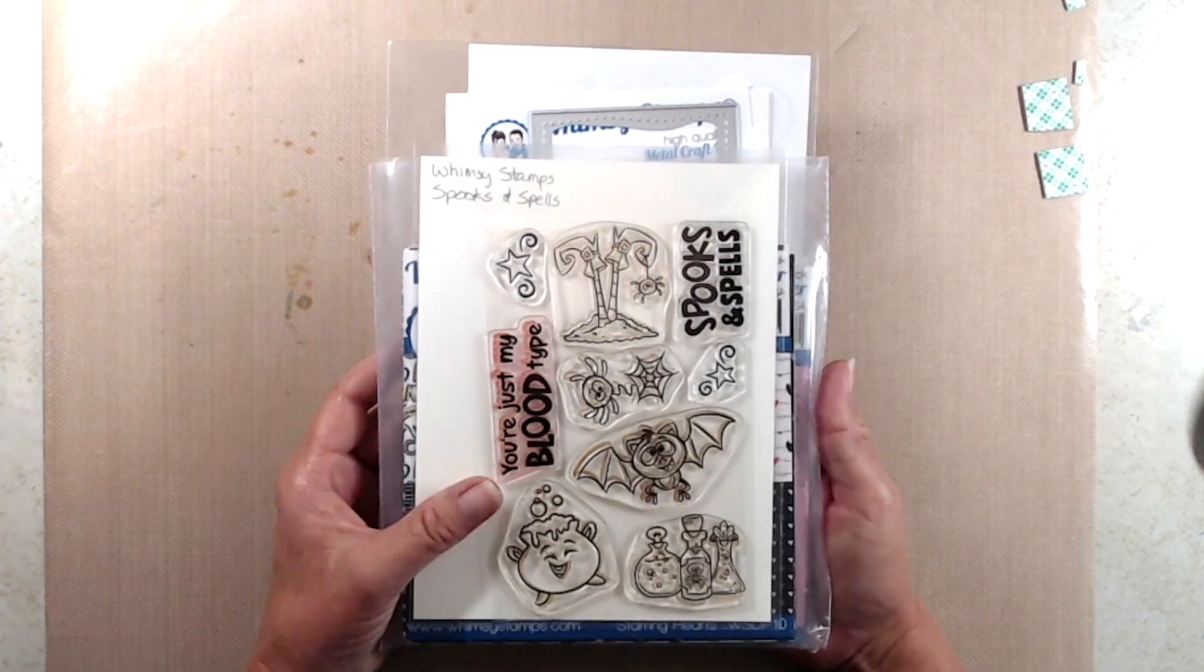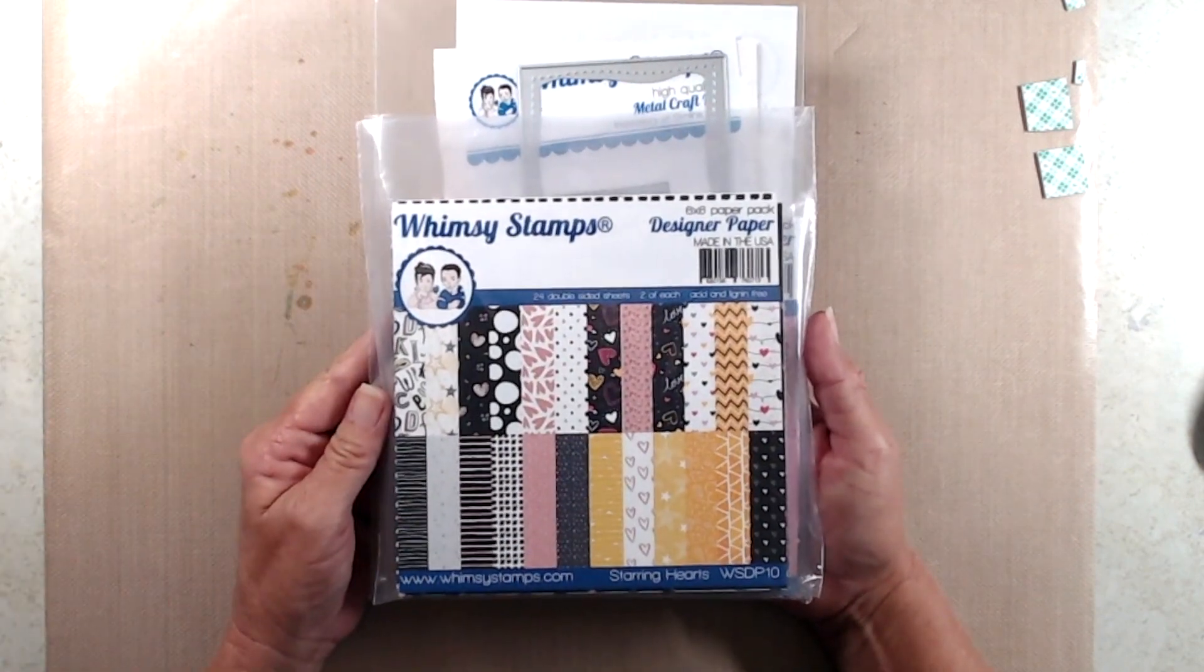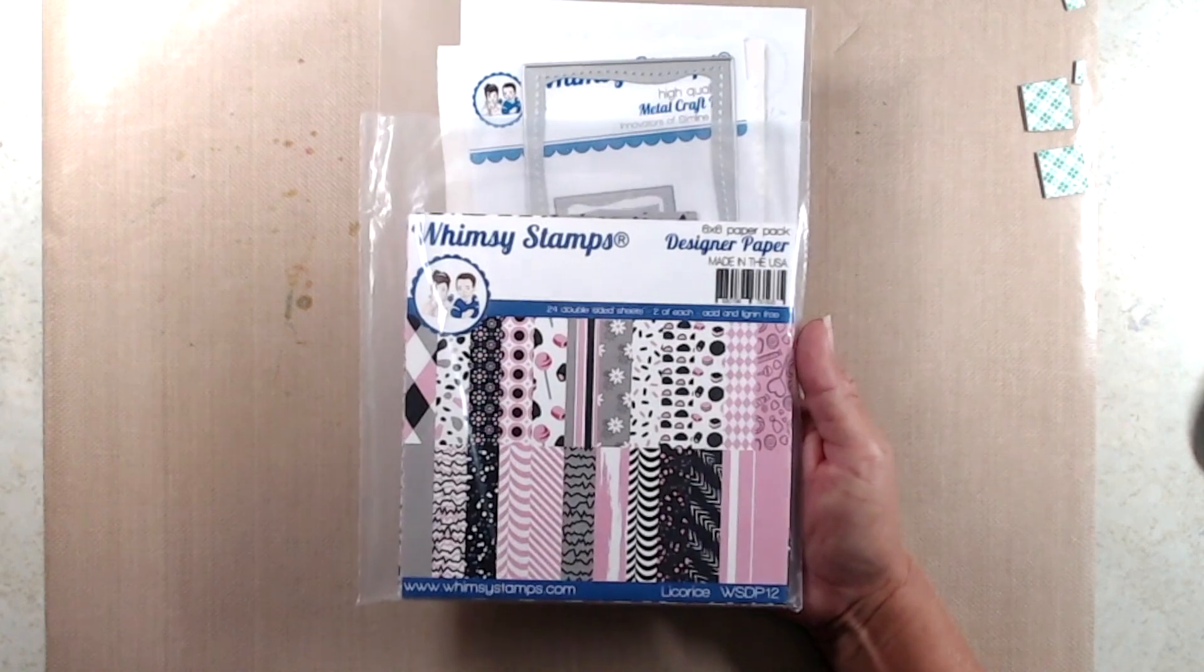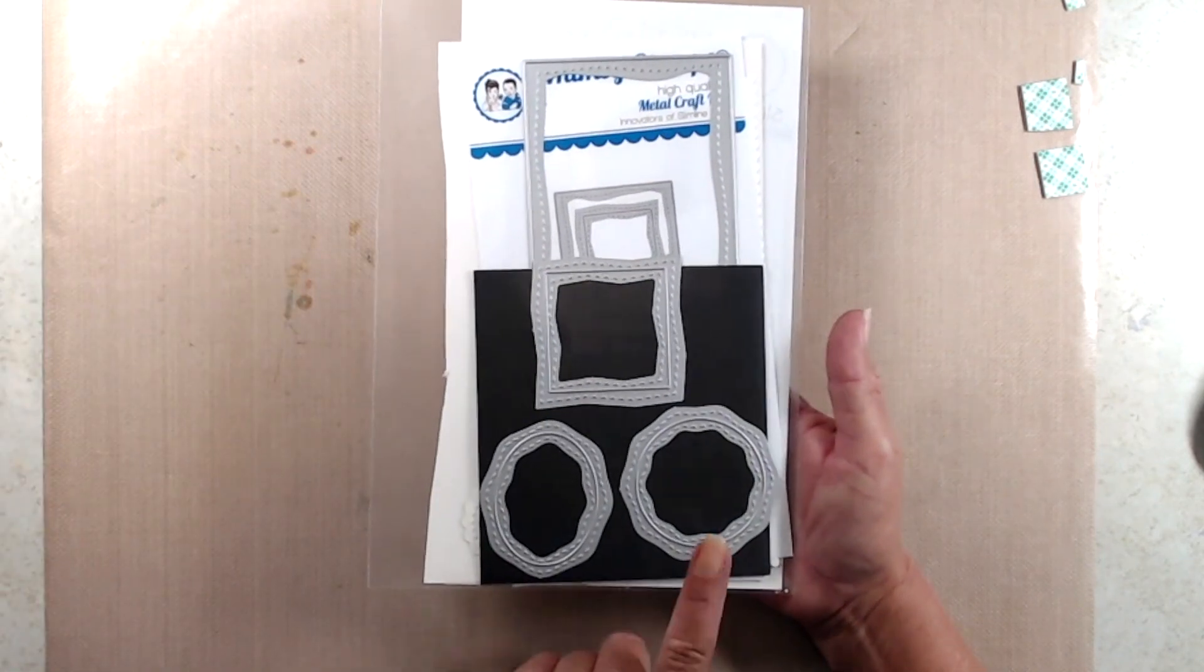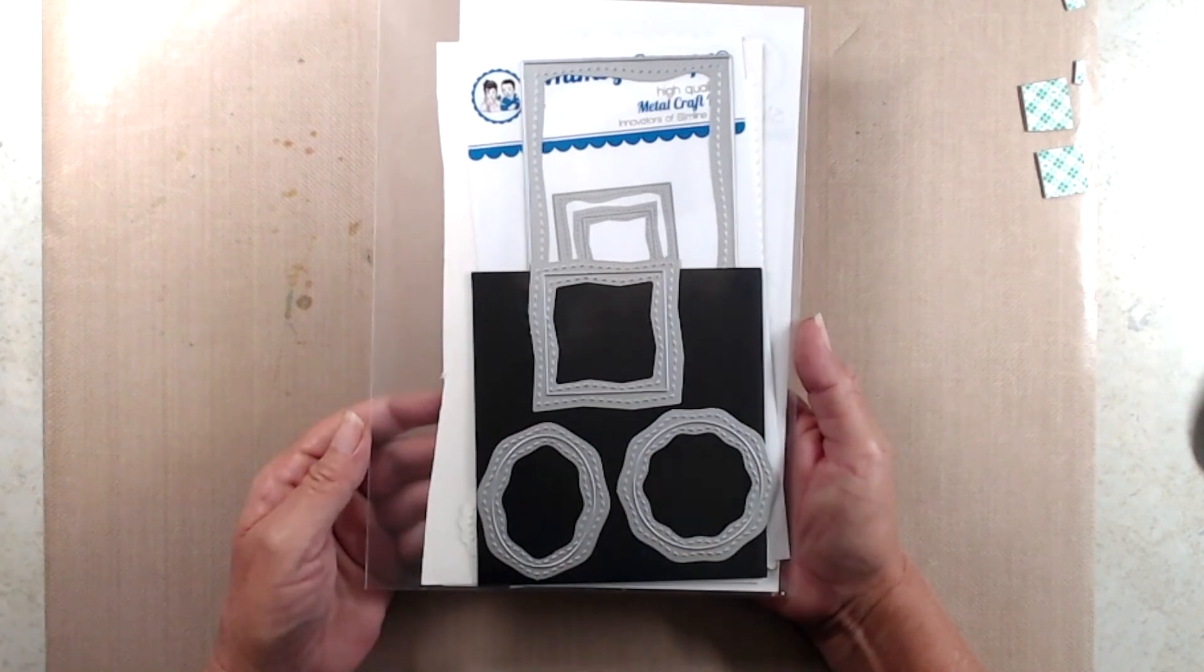I'll be using the new Spooks and Spells stamp set, paper from the starring hearts and licorice paper packs, and I'll be using the circle die from the slimline card builder die set.